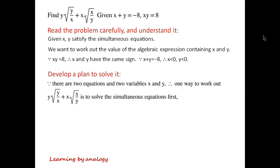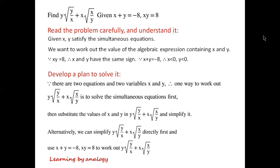Because there are two equations and two variables x and y, one way to work out y root of y over x plus x root of x over y is to solve the simultaneous equations first, then substitute the values of x and y. Alternatively, we can simplify the expression directly first and then use x plus y equals minus 8.